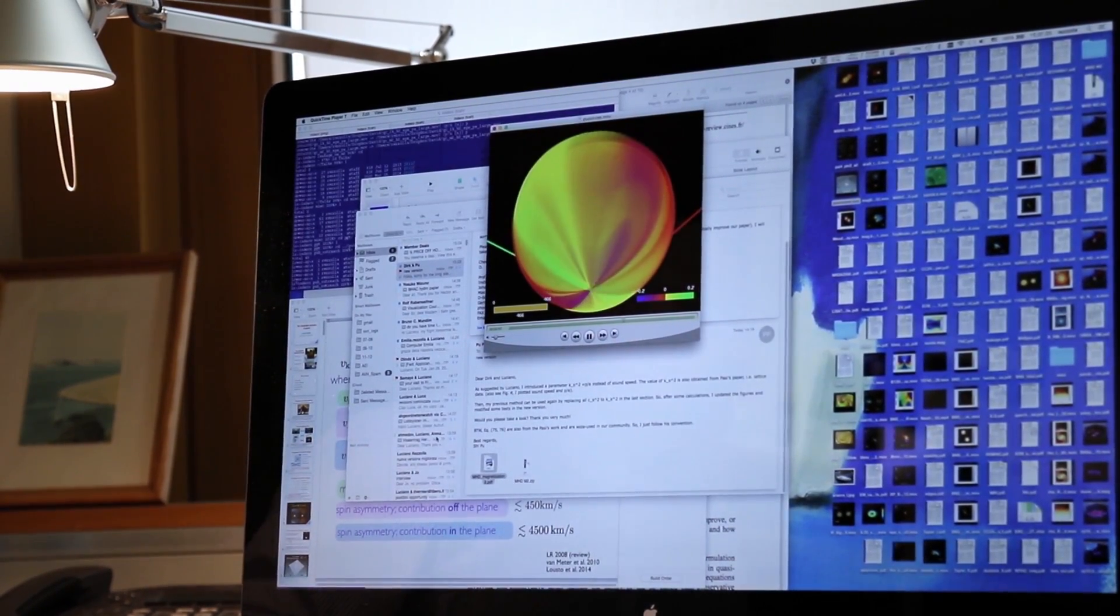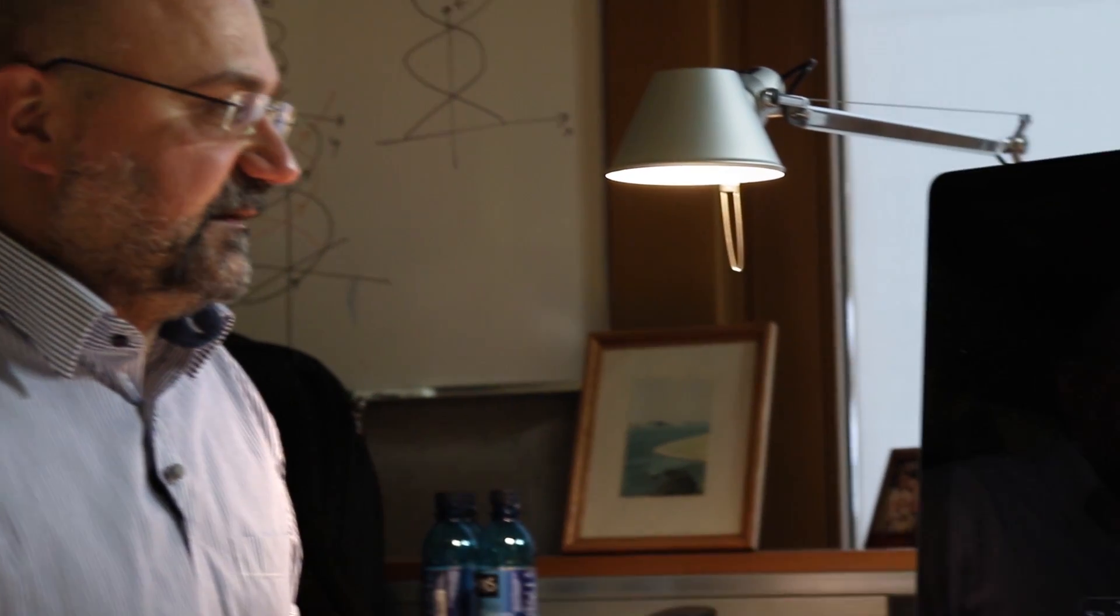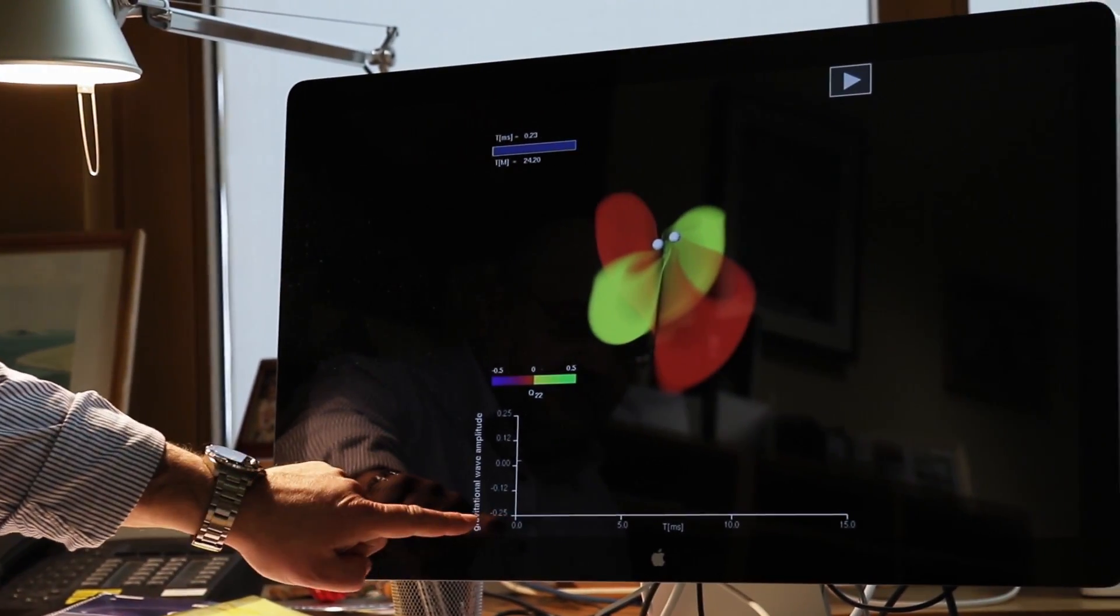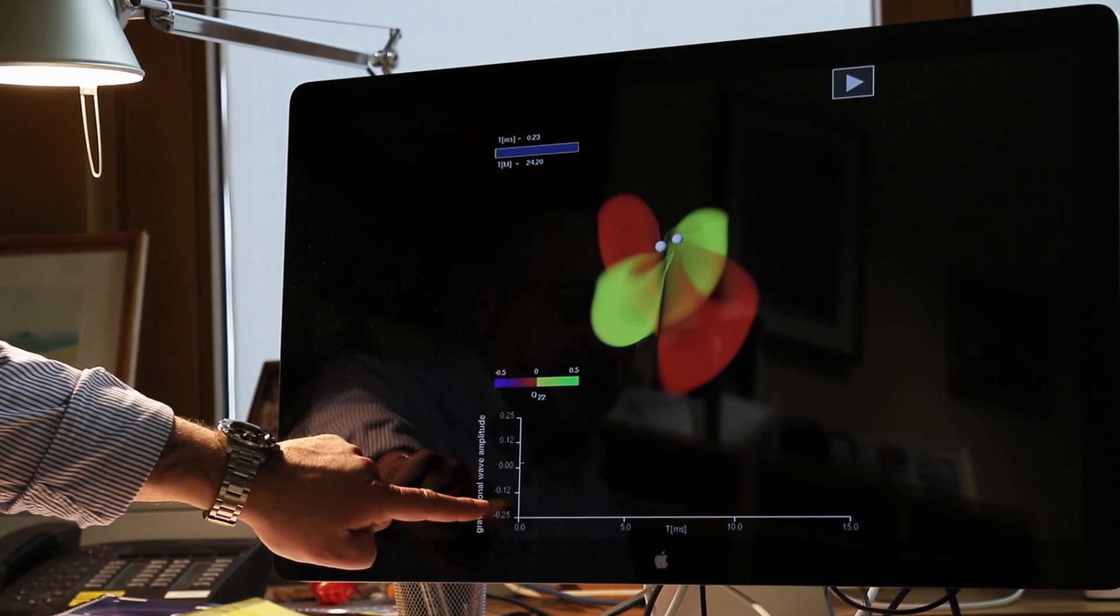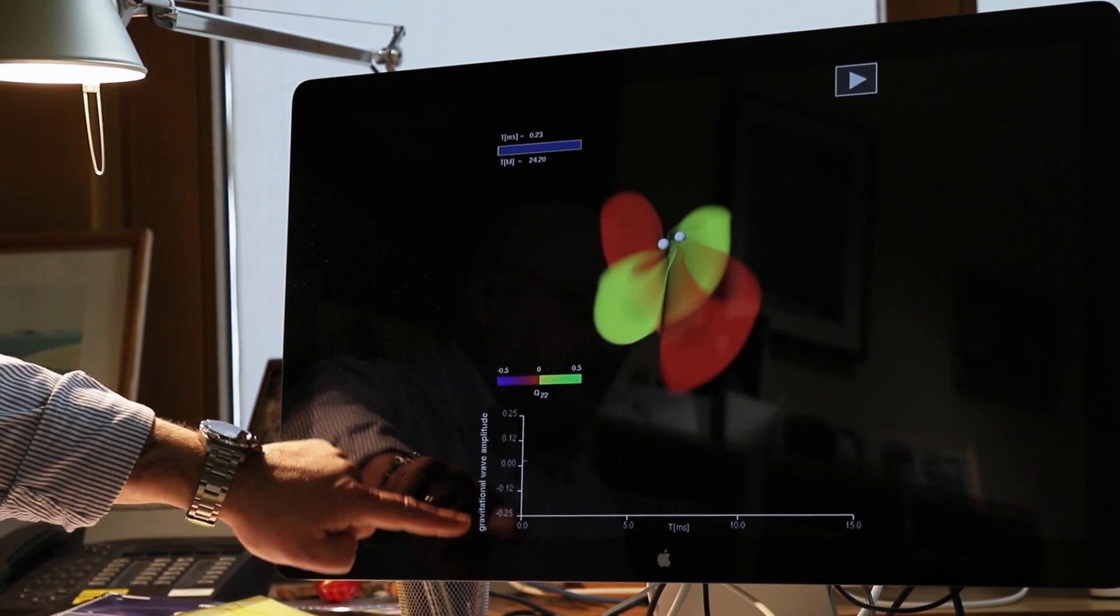May I show you something else? Here you have the two stars, which are these two little eggs. These are the two stars. And here I'm showing you the gravitational wave as it would be measured by a detector from this.